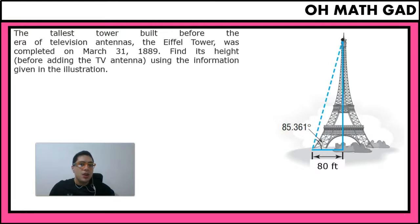We're given this illustration right here. We're given that someone who's observing 80 feet away from the center of the Eiffel Tower can see the top of the tower with an angle of 85.361 degrees. Again, we're not considering the TV antenna that it has nowadays, we're just going to consider the one until March 31st, 1889.